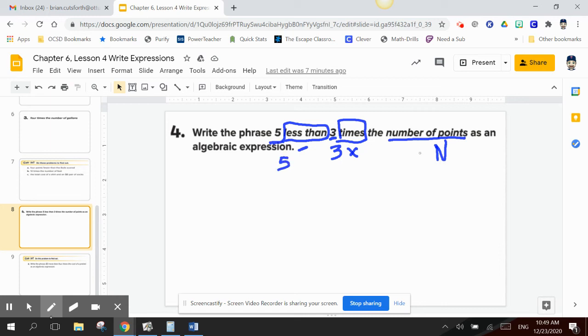So I have to know the number of points first, which is three times the number of points. So that's 3N, and then I have to subtract five. Any time it says less than, you know all of this has to go first.